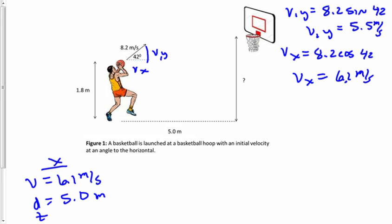Our job is to find time. The only useful equation in the x direction is d equals vt. So 5.0 equals 6.1t. Time equals 0.82 seconds.